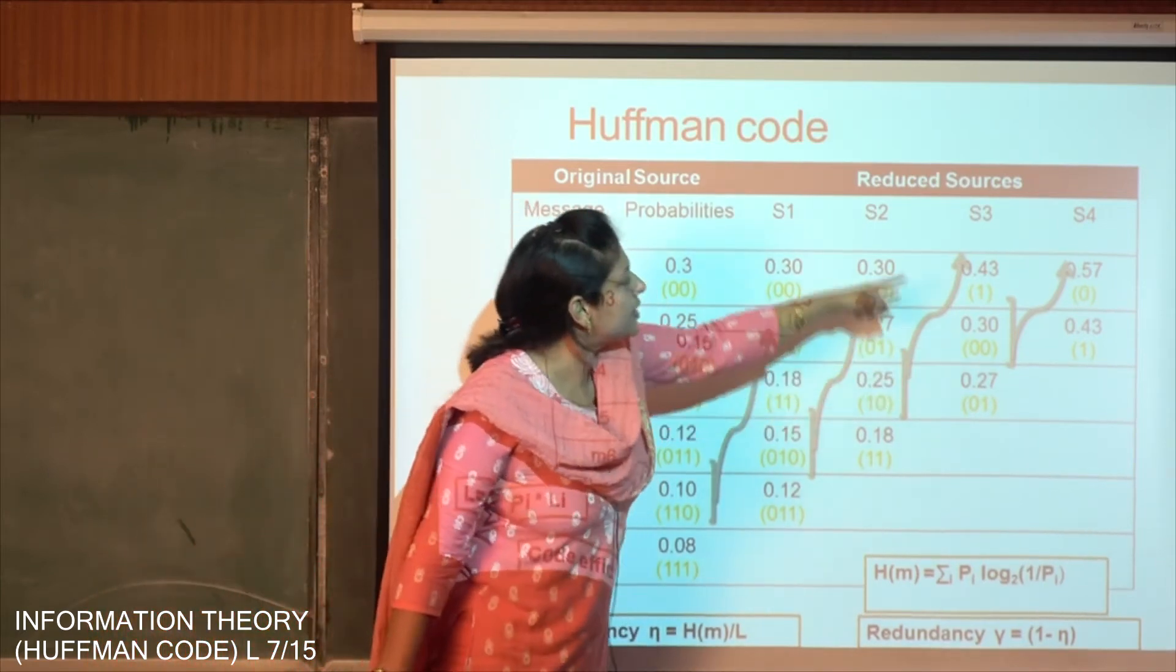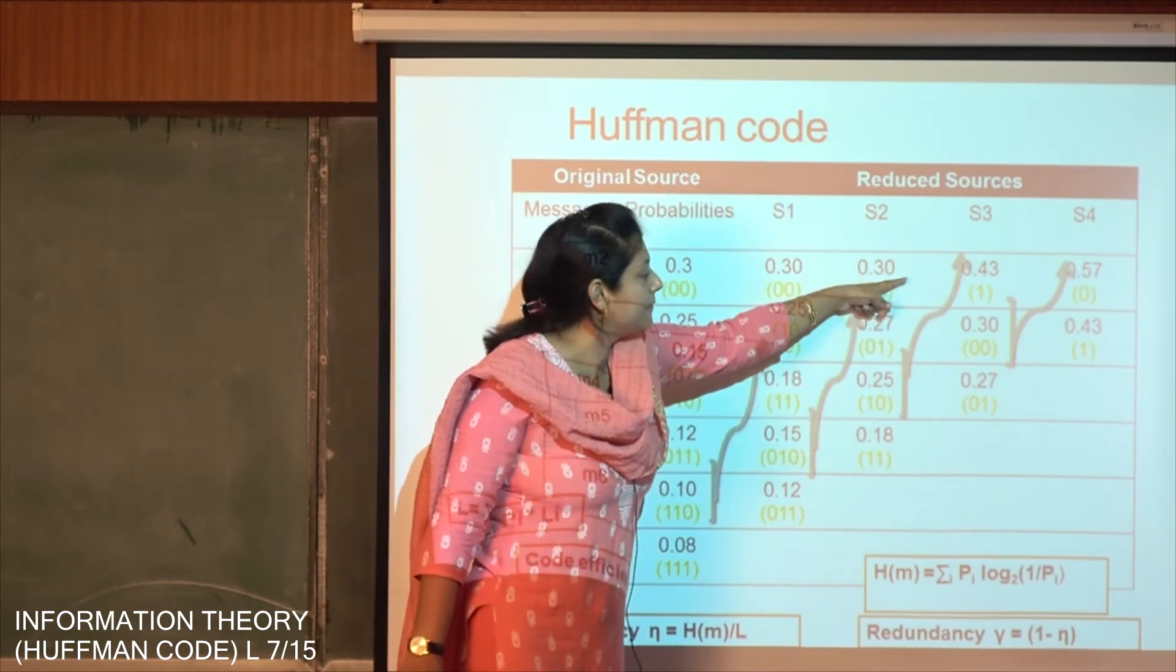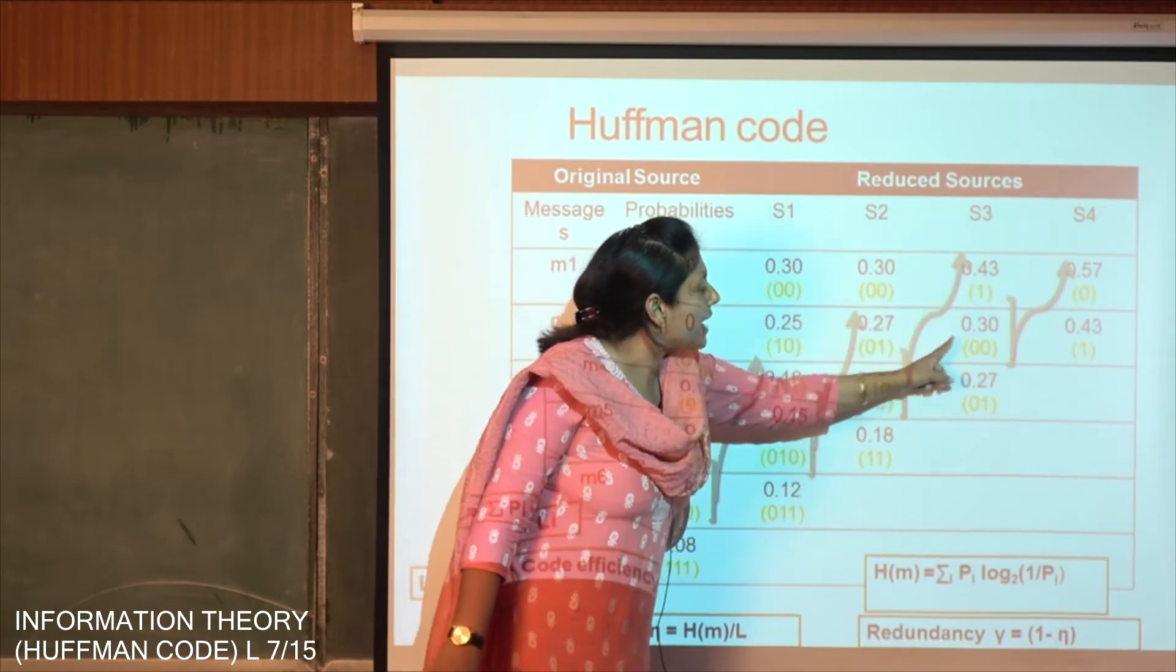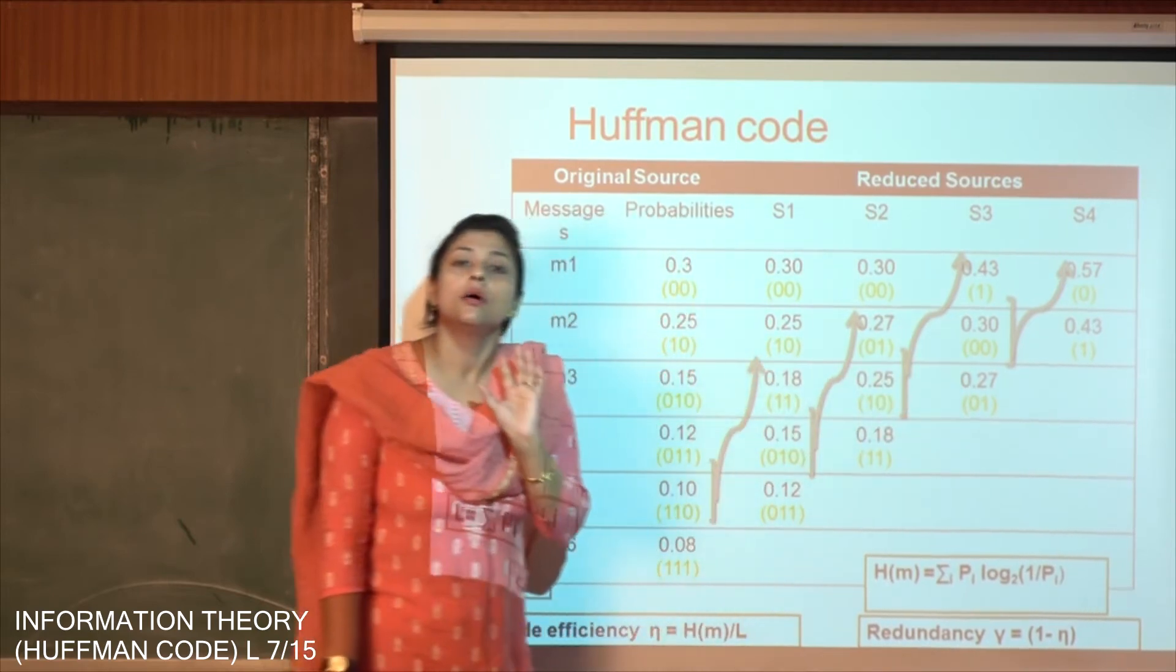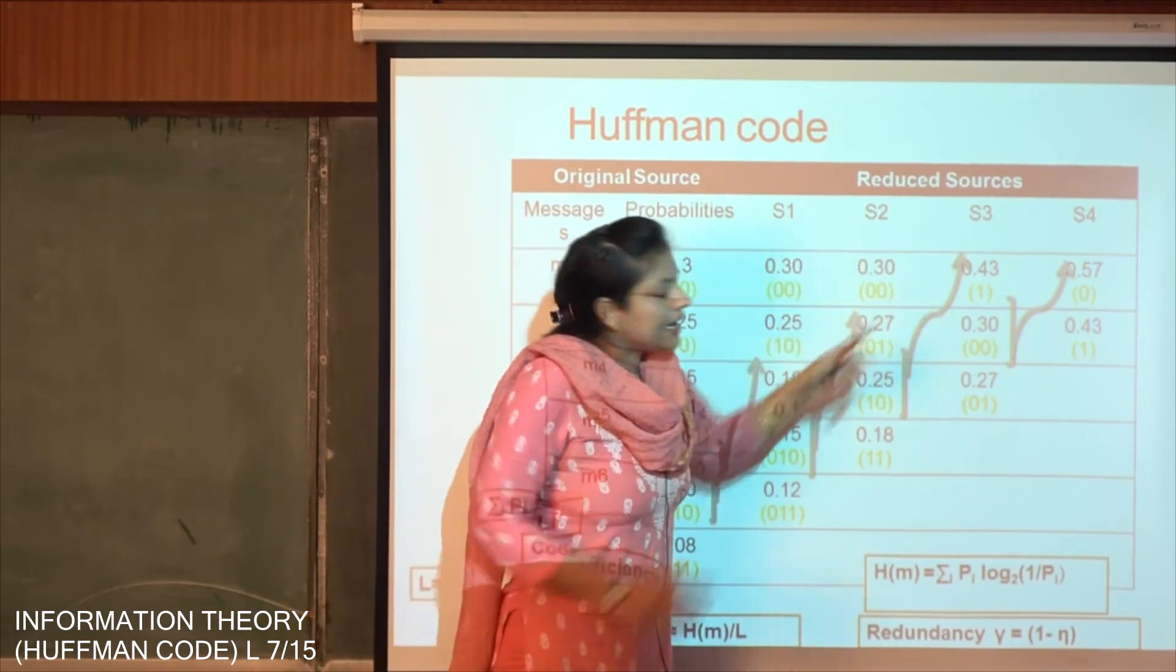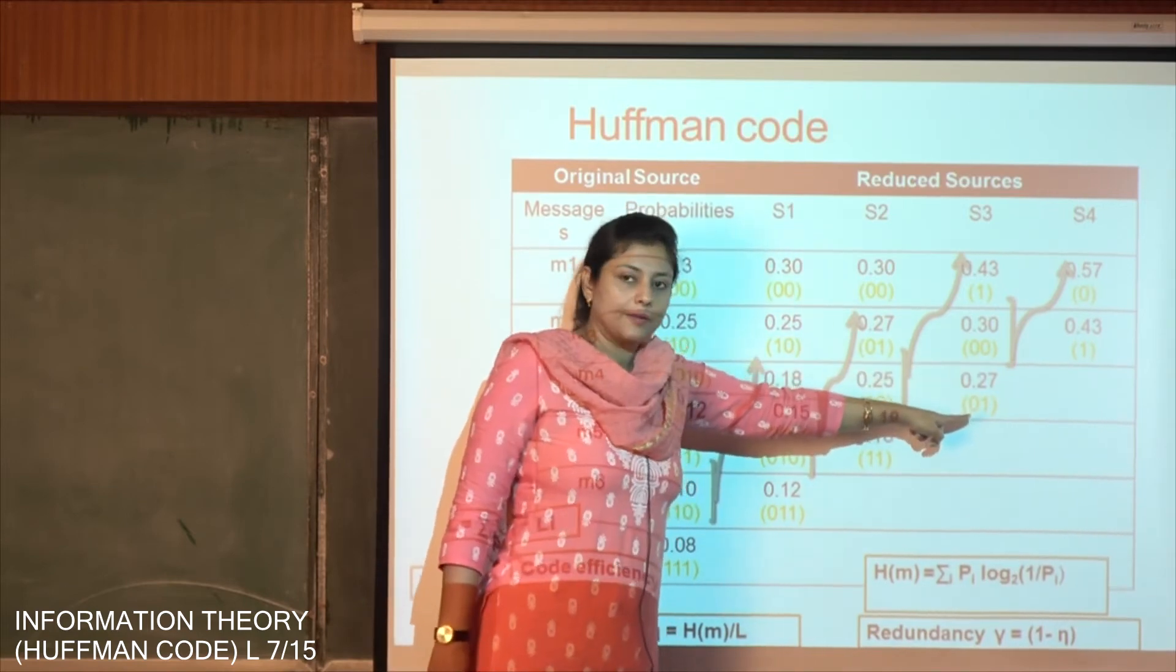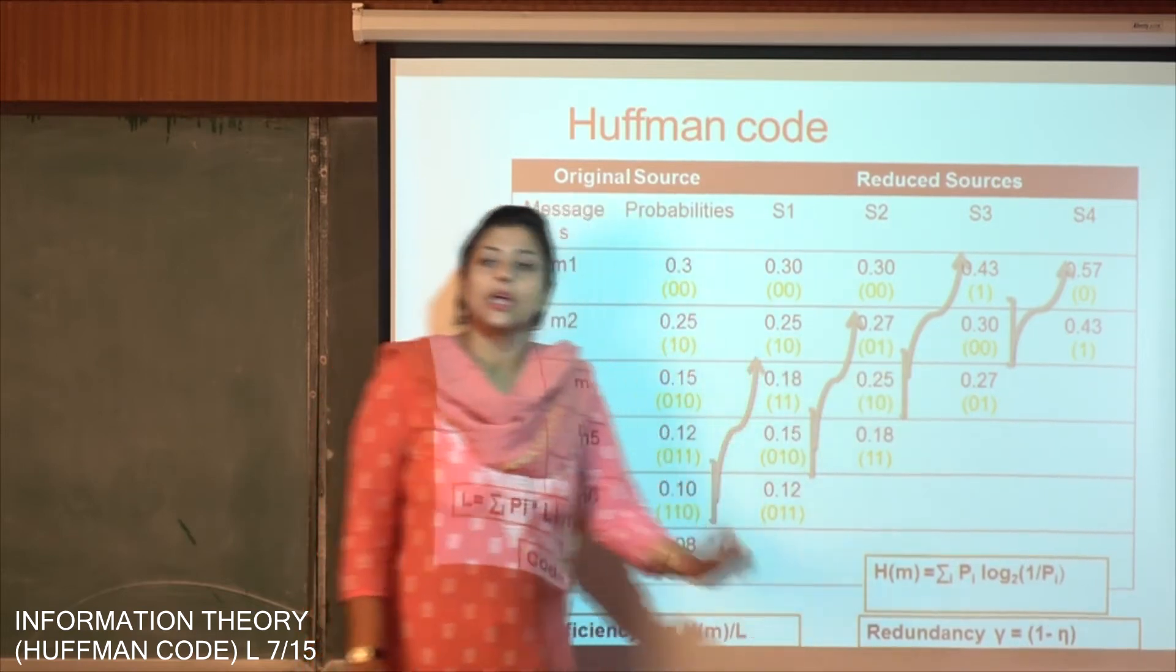Now this 0.43 in the S3 state is 1. So we put the value of 1 over here. Now this 0.3 and 0.27 adding them up we get 0.57. So we take that value 0 and put them in the left most bit. So for 0.3 and 0.27 the left most bit becomes 0 because these two are derived from 0.57. Now again in order to encode the right most bit, 0.3 is above 0.27, so encode it with 0 and 0.27 is below, so encode it with 1. So we are left with 0.3 having 00 encoding and 0.27 having 01 encoding.